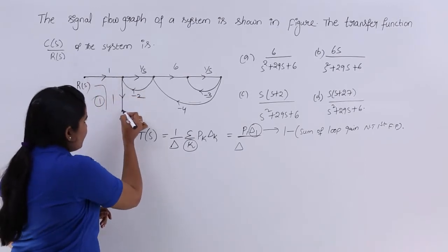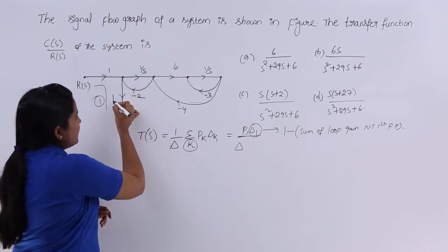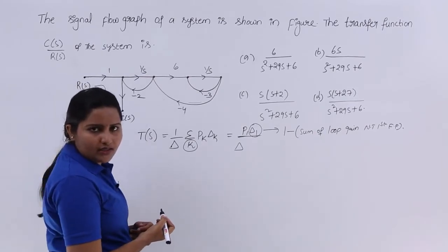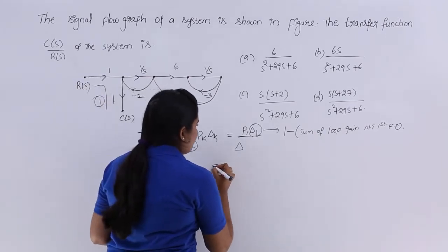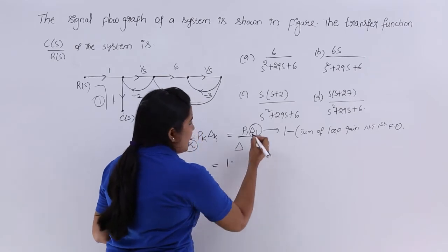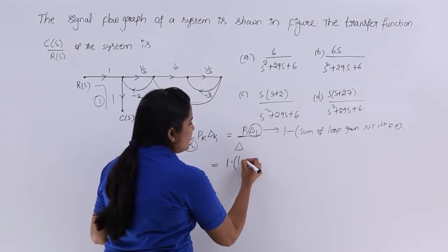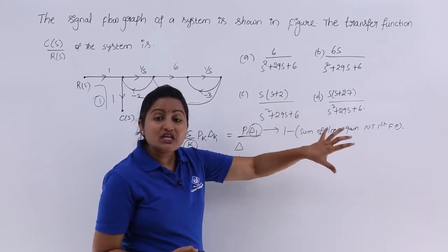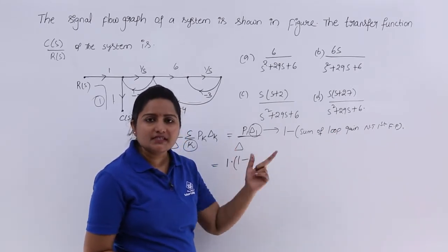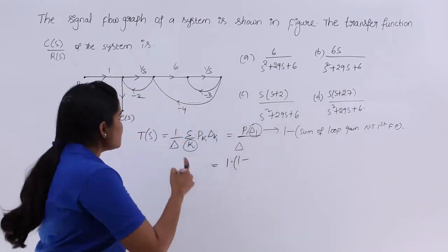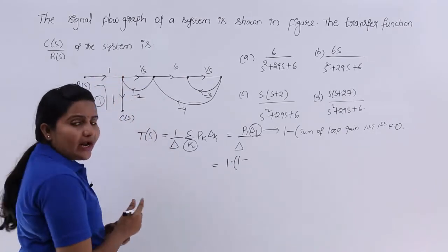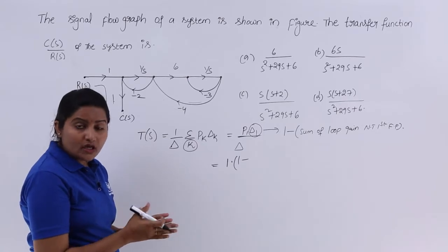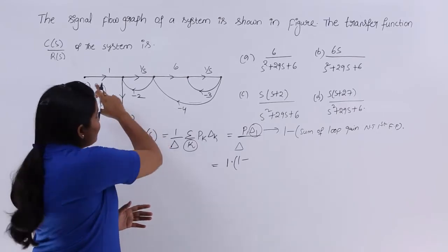Looking at the first forward path, the gain here is 1 and here the gain is also 1, so P1 equals 1×1 = 1. Coming to delta1, we check: is there any loops which are not touching your first forward path? Yes, we are having some loops which are not touching this path.